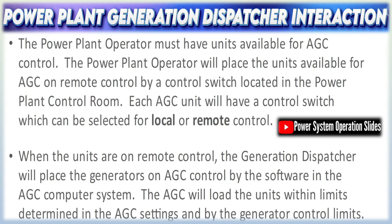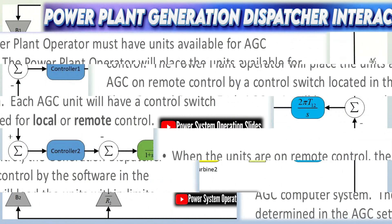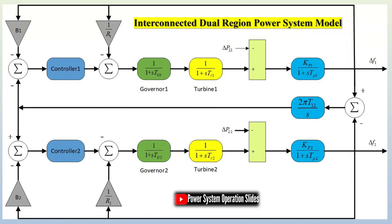In response, AGC instructs generators to reduce output. Negative A.C.E. suggests under-generation or importing more power than planned and a likely frequency drop, so AGC then calls for an increase in generation. By continuously making adjustments to drive A.C.E. towards zero, the system effectively balances the load-generation difference and stabilizes the overall grid.